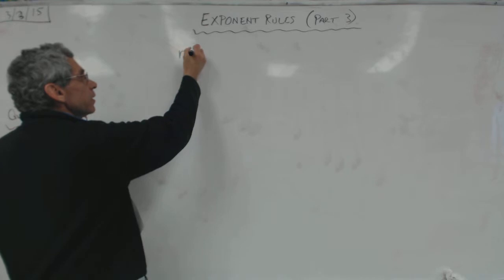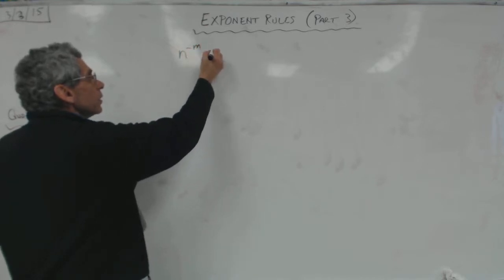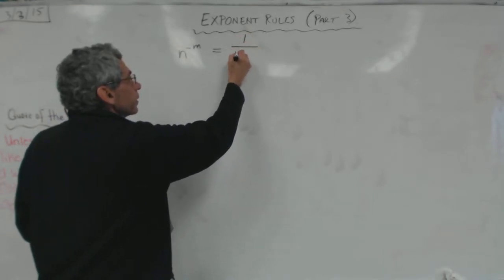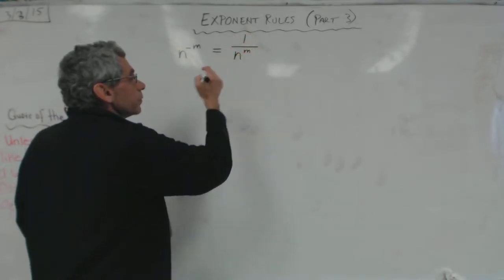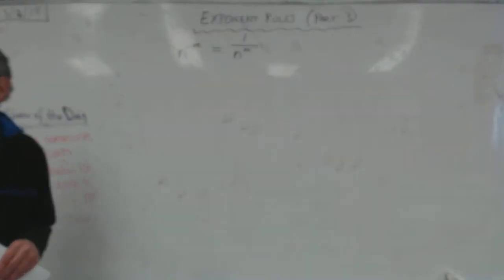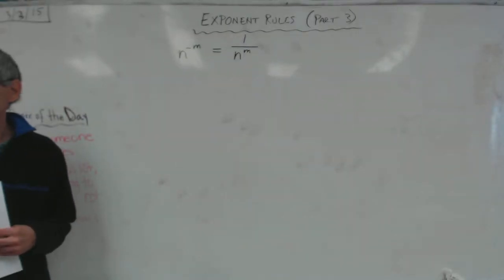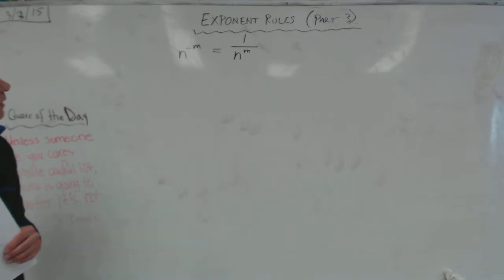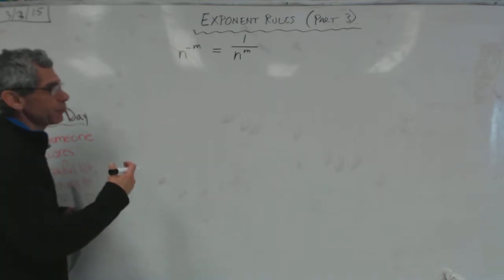And it says this: n to the negative m is equal to 1 over n to the positive m, which is very interesting. Notice, let's really look at this and see what is actually happening.